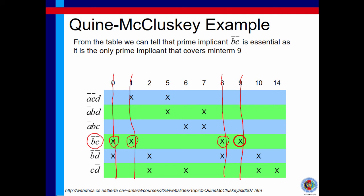Is there any more minterm that is not covered? Definitely there are — many more minterms remain uncovered. But let us see if we can cover any of them by taking the next essential prime implicant. In the next step, we will have a smaller table where minterms 0, 1, 8, and 9 are removed, and the row containing essential prime implicant B̅C̅ will also be removed. We will have a smaller table in the next stage, so let's continue this next move later.